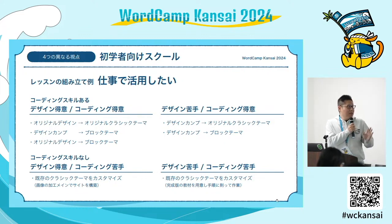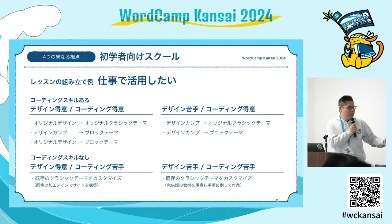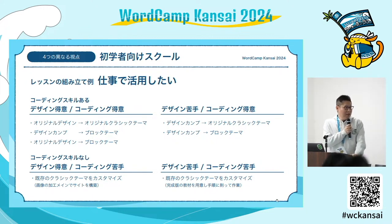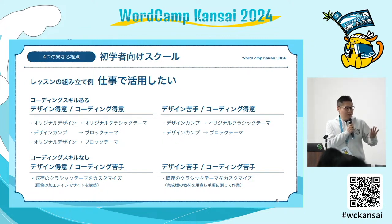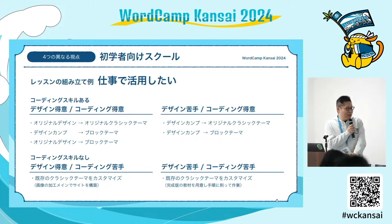考え方のポイントとして、生徒さんの要望とスキルのレベルから内容を考えていきます。例えば、デザインが得意でコーディングも得意という方であれば、オリジナルデザインでクラシックテーマを作ったり、ブロックテーマで作ってみるというチャレンジもいい。こちら側が用意したデザインカンプを使ってブロックテーマで再現する方法も考えられます。デザイン苦手でコーディング得意の方はカンプを渡してクラシックテーマ化する、デザイン得意でコーディング苦手なら既存のクラシックテーマをカスタマイズする、という方法も考えられます。